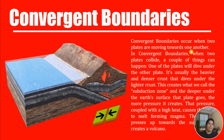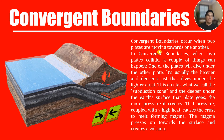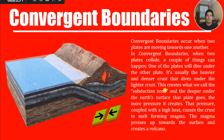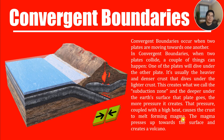Convergent boundaries occur when two plates are moving toward one another. When two plates collide, one of the plates — usually the heavier and denser crust — will dive under the other plate. This creates what we call a subduction zone. The deeper under the earth's surface that plate goes, the more pressure it creates. That pressure, coupled with high heat, causes the crust to melt, forming magma. The magma then rises up towards the surface, creating a volcano.